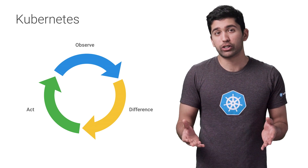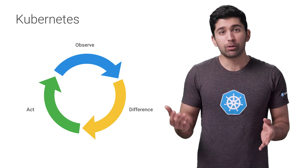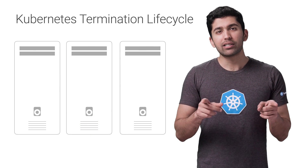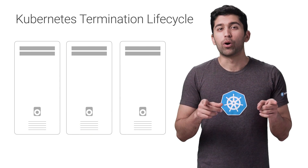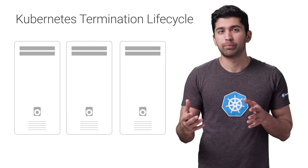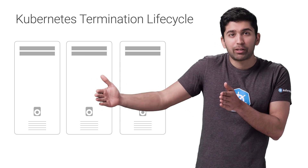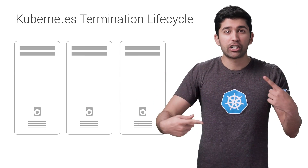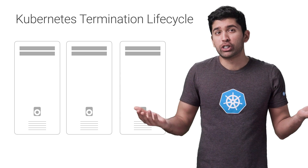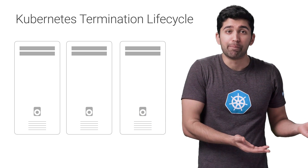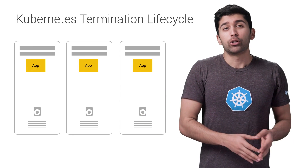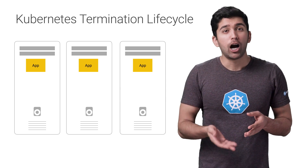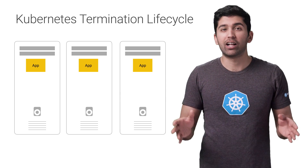If a resource fails a health check, Kubernetes will just automatically spin up a replacement. But Kubernetes does a lot more than monitor your application for crashes. It can create more copies of your application to run on multiple machines, update your application, and even run multiple versions of your application at the same time. So this means that there are many reasons why Kubernetes might terminate a perfectly healthy container.